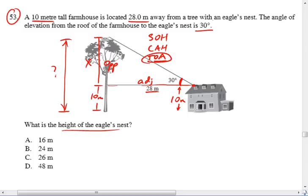Let's set up the tangent ratio for this triangle. The tangent of 30 degrees is the opposite side, which is x, divided by the adjacent side, which is 28 meters. So I need to solve that for x.